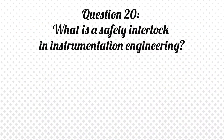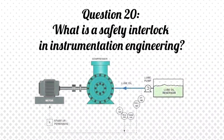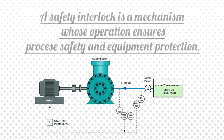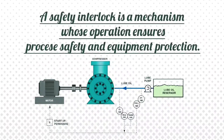Question 20: What is a safety interlock in instrumentation engineering? Answer: A safety interlock is a mechanism whose operation ensures process safety and equipment protection.